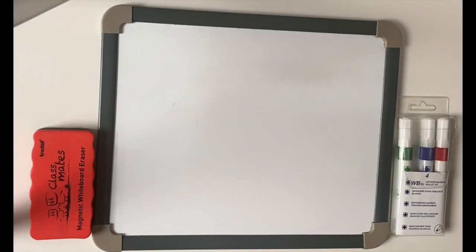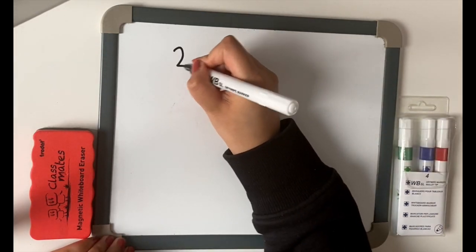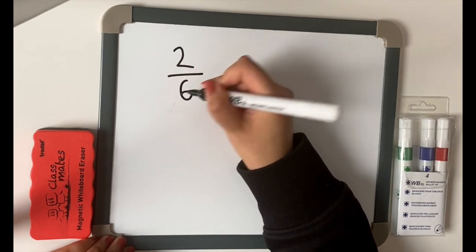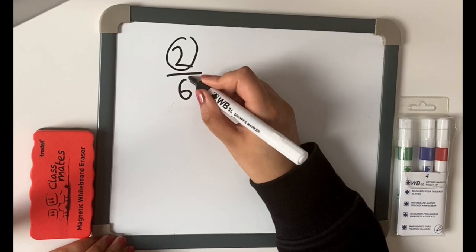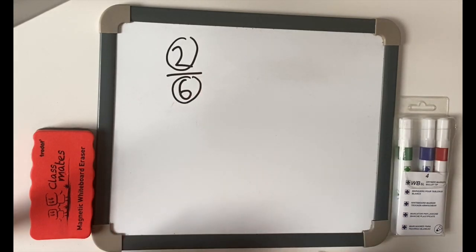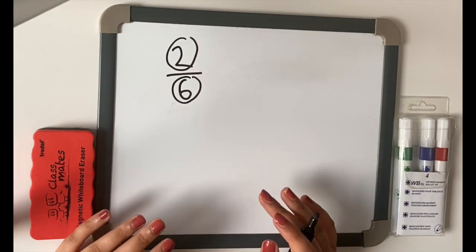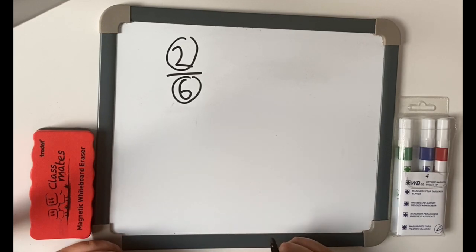Hi everyone, welcome back to my channel. Today we are going to look at how to simplify fractions. In order to do this, we must divide the top number and the bottom number by the highest number that can divide into both numbers exactly.